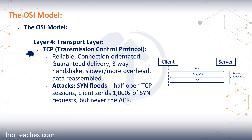If I go to ThorTeaches.com and ask the server to send me the website information, the server sends it but also sequences all the packages. On my system I might receive packets 1, 2, 3, 4, but 5 is missing. I will then ask: can you resend package number 5? By the time I do that I probably have received 6, 7, 8, 9, 10. Once I get packet 5, it will be added between 4 and 6. Eventually I will have received all the packages and can see the full website.